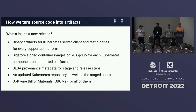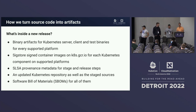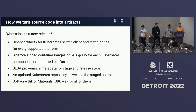What's inside a release? We have binary artifacts for the Kubernetes client, server, and test binaries useful for integration testing, built for five or six supported platforms. We also have container images that reuse those binary artifacts. Those container images are now signed, and we're working on getting binary artifacts signed too. We have SLSA provenance metadata for the stage and release steps, the updated Kubernetes repository, staged sources, and software bill of materials for all of it.